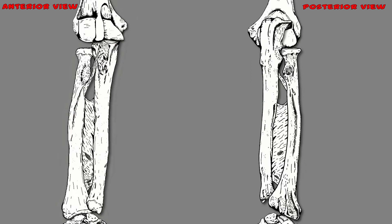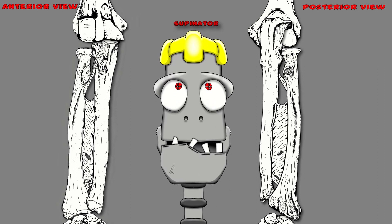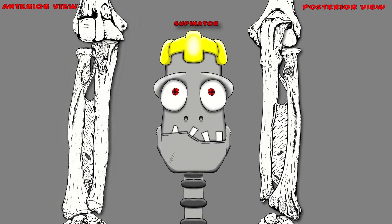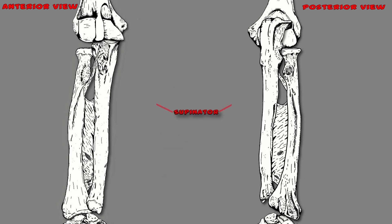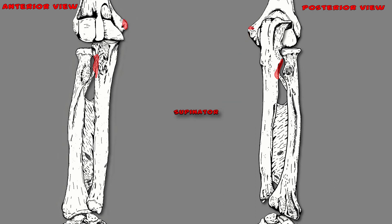Next up is the supinator muscle — probably one of the coolest muscle names in existence. That muscle originates on the supinator crest of the ulna. There is actually a part of the ulna bone named after it, which makes one of the origins easy to remember. It also originates on the radial collateral ligament and the lateral epicondyle of the humerus.